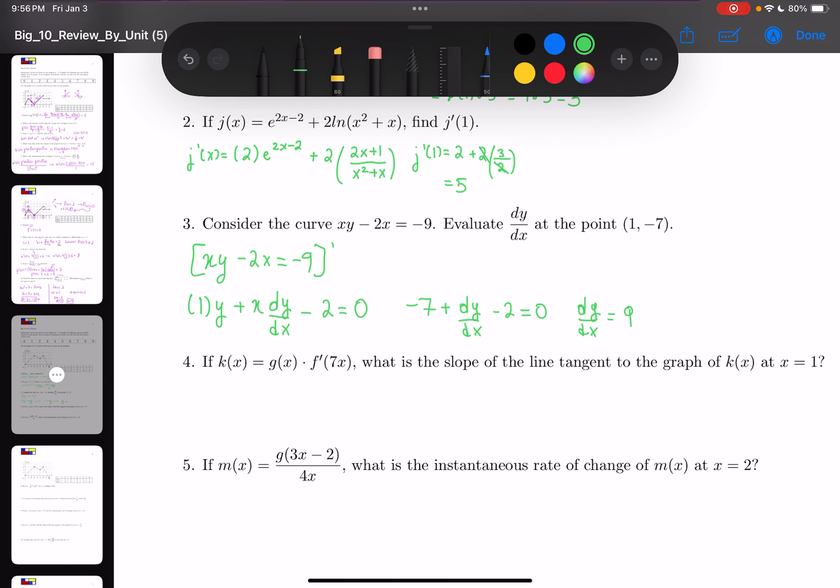Number 4: k(x) = g(x) * f'(7x). What is the slope of the line tangent to the graph at x = 1? Whenever they say slope of the line tangent, they want you to find k'(1).